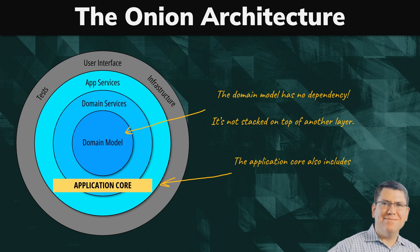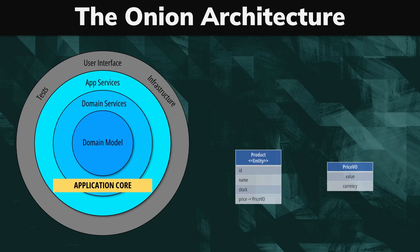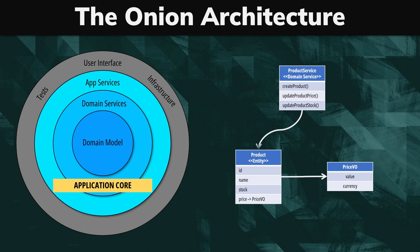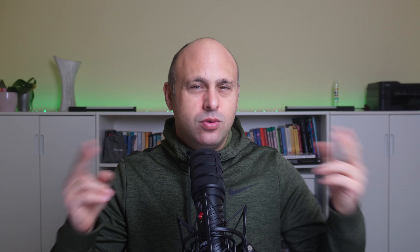The application core also includes domain services and application services. Domain services are typically stateless operations that operate directly on classes within the domain model. If you are working with domain-driven design, services are effectively part of the domain model, so those two layers could be considered as one.